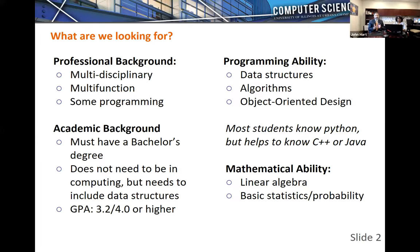We do not want to admit any students who are going to struggle with the coursework. We're very careful to communicate what's needed to succeed in the program. The third requirement is proficiency in computing sufficient to get through graduate-level coursework. The University of Illinois computer science program is ranked fifth in the nation — very highly ranked and rigorous. The University of Illinois is well known for computing: we invented online computing for education with the PLATO system in the 70s, the NCSA National Center for Supercomputing is here, and this is where the browser was invented.